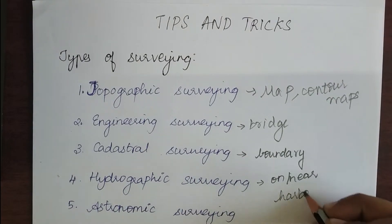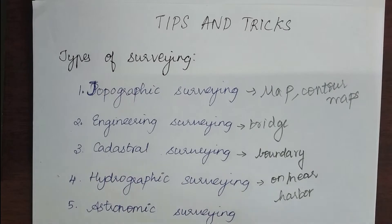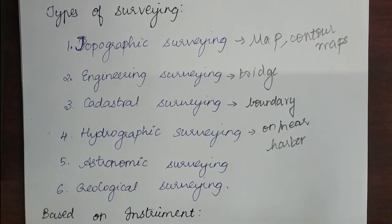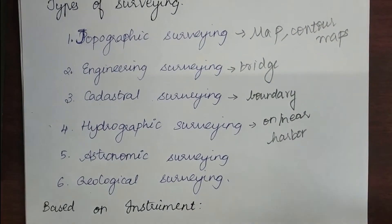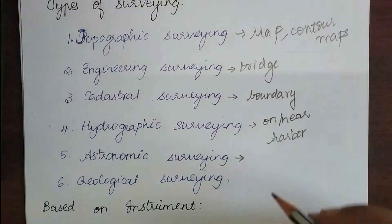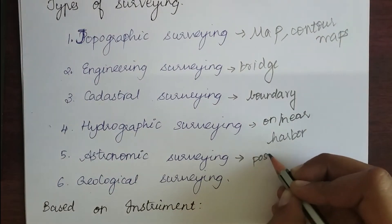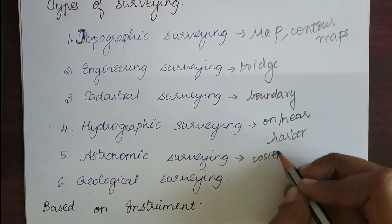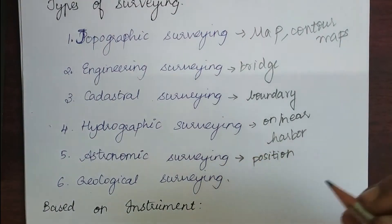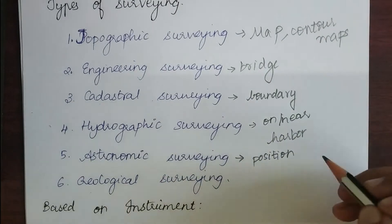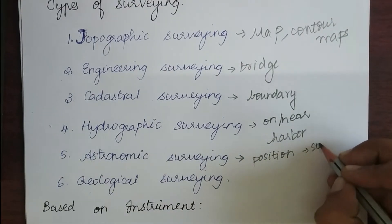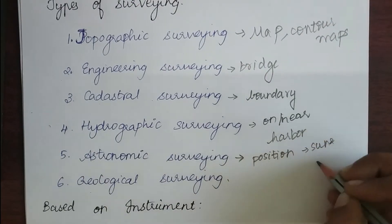Next is astronomic survey. Astronomic surveying is used to find the exact position of an object on the surface of the earth. We use the help of the sun and stars to find the exact position of an object on the earth's surface.